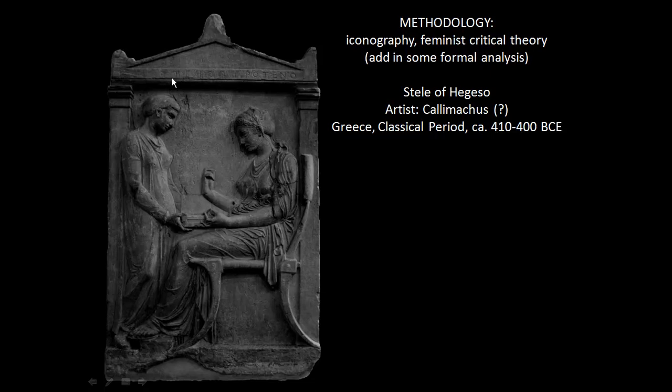Now let's look at some gender-based ideas. There's an architectural frame that makes it look as if they're sitting indoors — this is an indoor scene. This relates to the idea of the spatial domain of genders in the ancient world: women were more typically constrained to the domestic realm. This woman is shown within the domestic space she would occupy, and women were seen as being in charge of that space — overseeing the servants, for example.